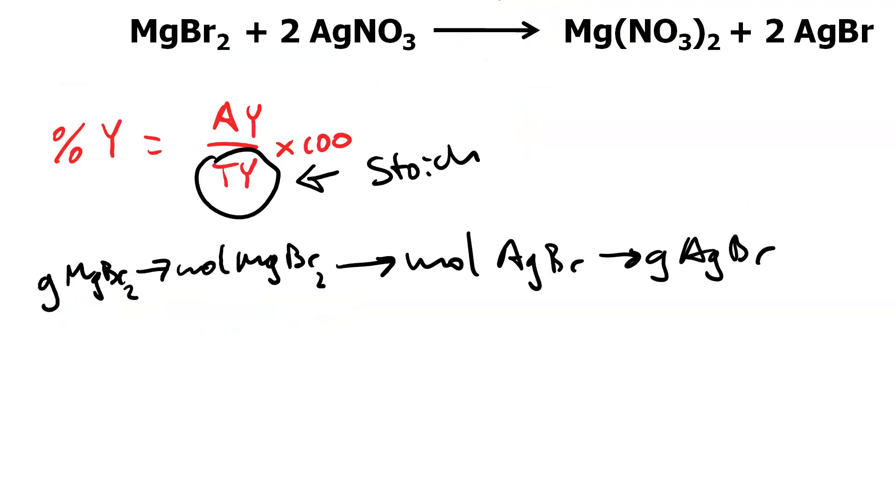Mapping it out, it's familiar. We're going to use a molar mass to go from grams of MgBr2 to moles of MgBr2. We'll use a mole ratio to go from moles of MgBr2 to moles of AgBr, and we will use another molar mass to find grams of AgBr.